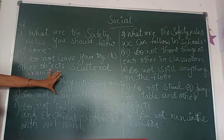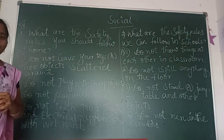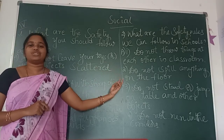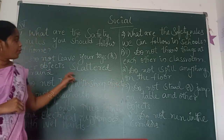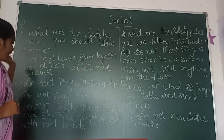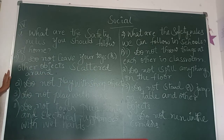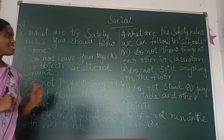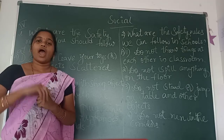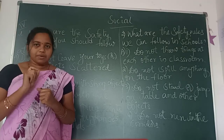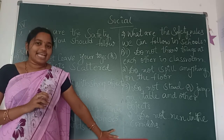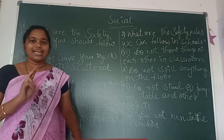Okay, children. Today's work: you have to read and learn these two questions and answers, and you have to practice the spellings — words like 'appliances.' Practice them well and write them without looking at your book. In the next session, I will explain the remaining two questions.